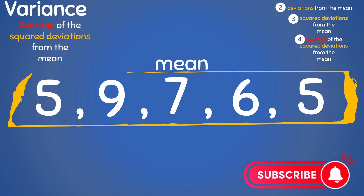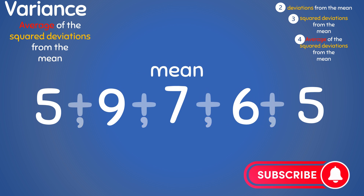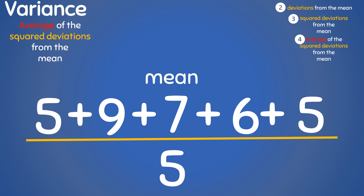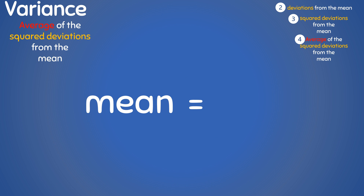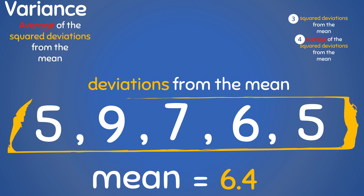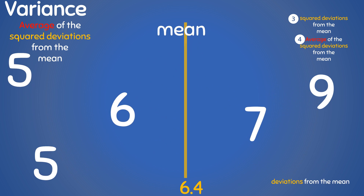To find the mean, we simply add all the data points together and divide by their number, which is five. This will give us the mean of 6.4. Now that we know what the mean is, let us understand the deviations from the mean. Because these data points are different, they will be scattered around the mean.